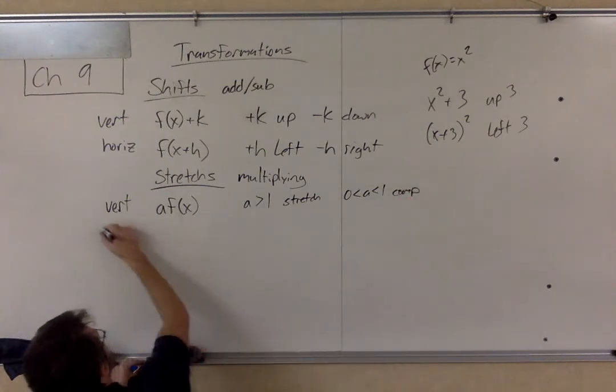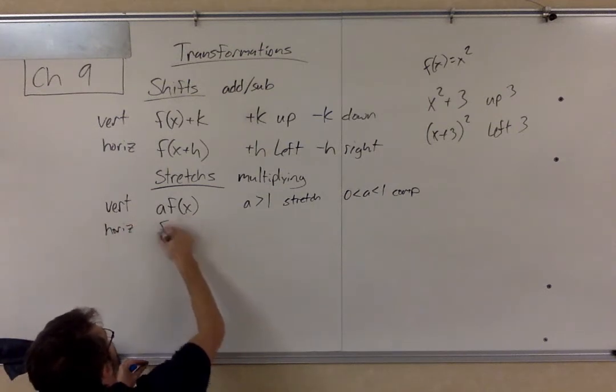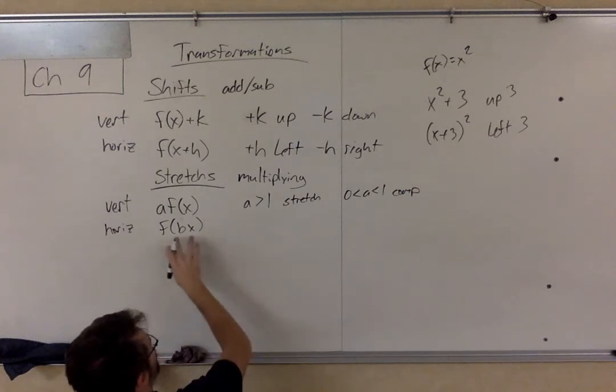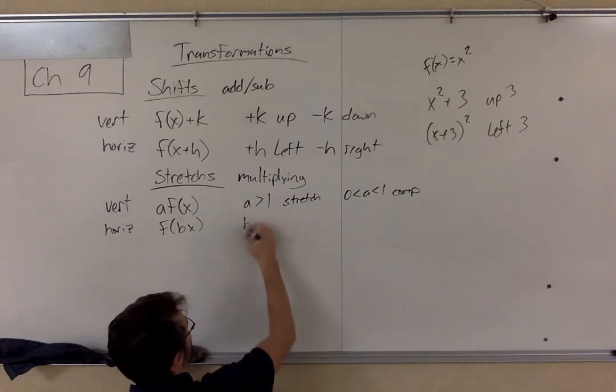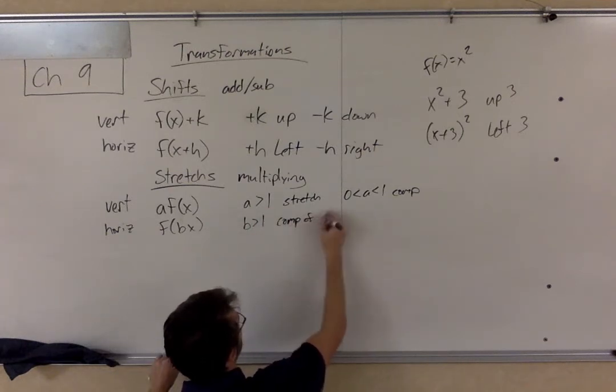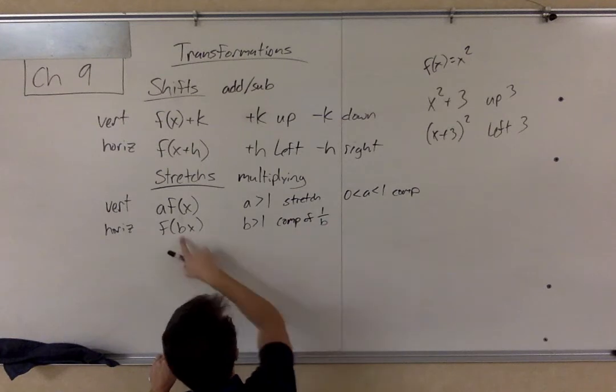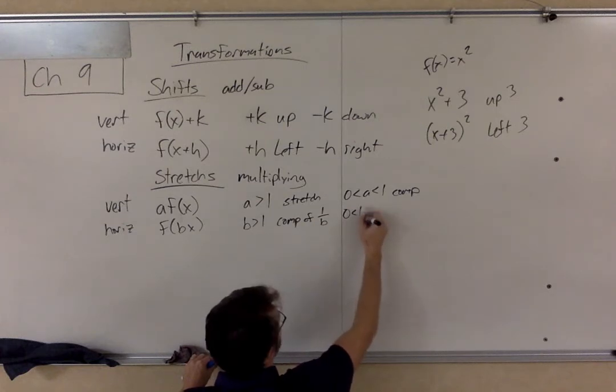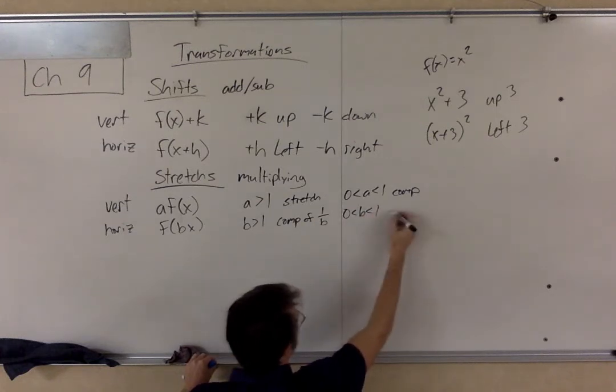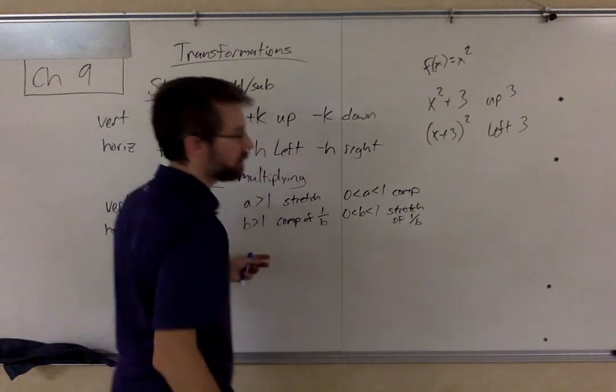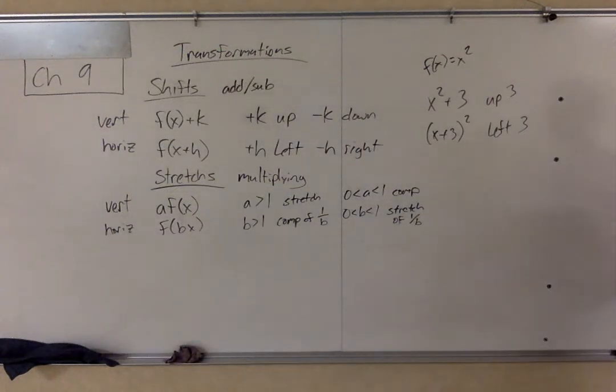With our horizontals, now it is f of, say it's b times x, and it's on the inside of the grouping symbol. Our rules are as follows. If b is greater than 1, it is a compression of 1 over b, so the reciprocal of b. If, instead, b is between 0 and 1, that is a stretch of 1 over b, of the reciprocal. It's a little more complicated with that one. That's the one that students struggle with the most.